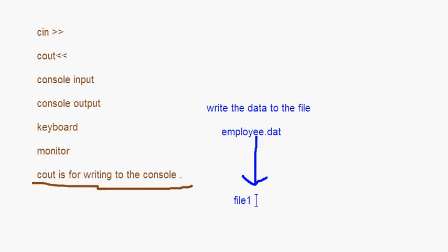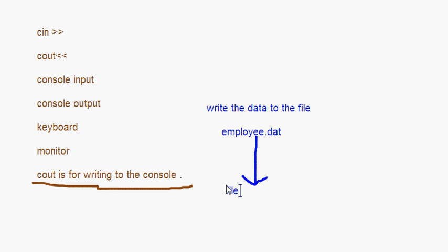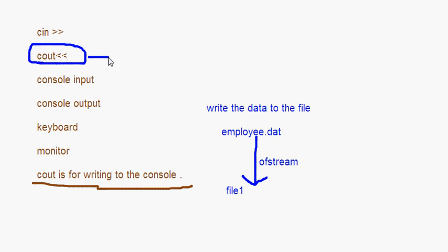When we say cin and cout, cin is basically your input stream and cout is the output stream, as given by the header file iostream.h — input output stream. So cin is associated with the input stream, cout is associated with the output stream. But now I want to use the object we created, that is file1, and this file1 is associated with the ofstream. File1 is associated with employee.dat through the ofstream. So instead of using cout, I am going to use file1, which is the object associated with the output stream.